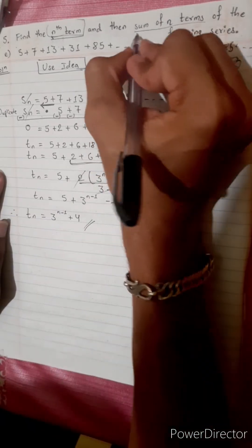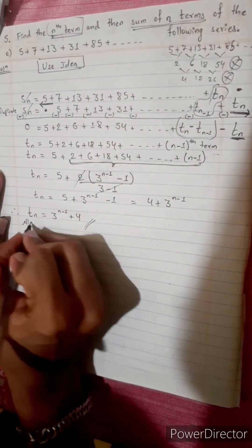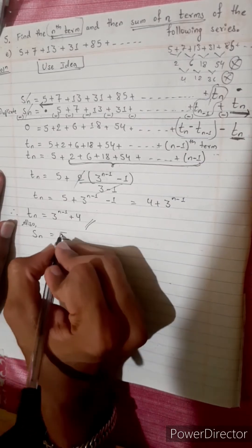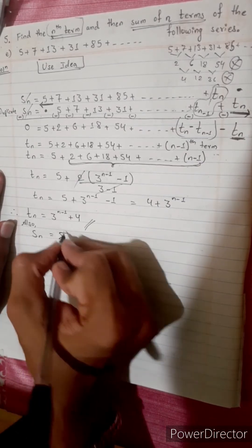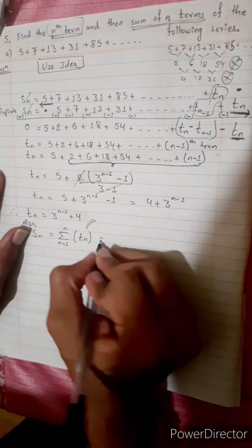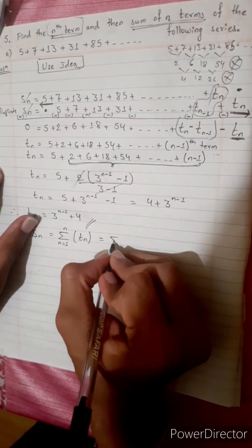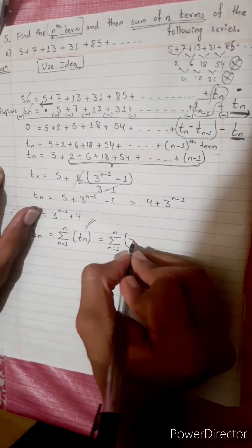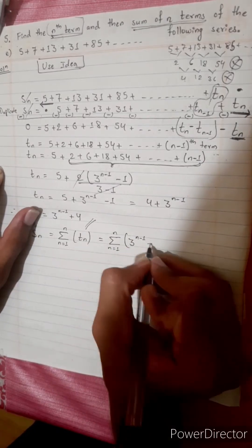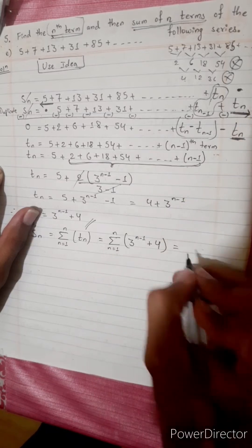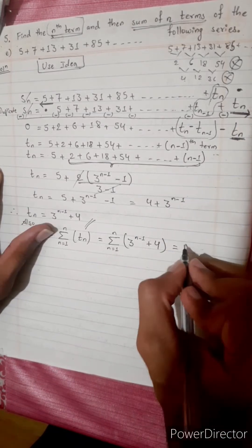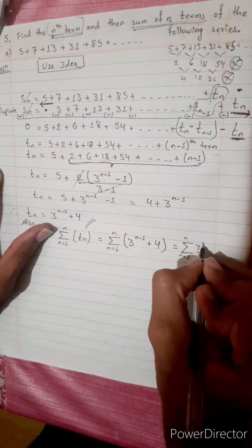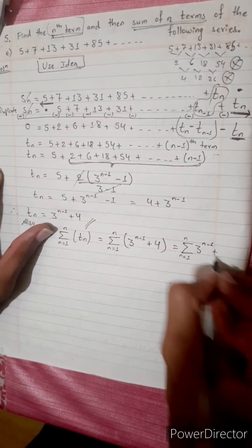This is the answer for the nth term. Now for the sum of nth term, SN equals summation from n equals 1 up to n of Tn, where Tn equals 3^(n-1) plus 4. Separating: summation of 3^(n-1) plus summation of 4. The 4 is a constant, so it gives 4n.